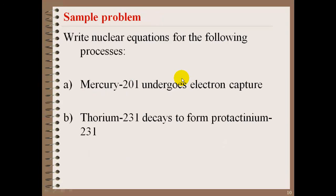Some sample problems here. Write the nuclear equations for the following processes. Mercury-201 undergoes electron capture. In this instance, you're going to have mercury, which is Hg, and this will be 201. Mercury's number is 80. It goes through electron capture, so this indicates that this will be a reactant. What happens is you get 201. The mass doesn't change, but 80 minus 1 is 79, which ends up being gold, Au.